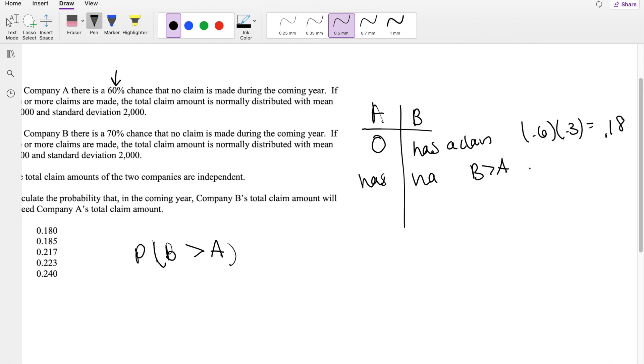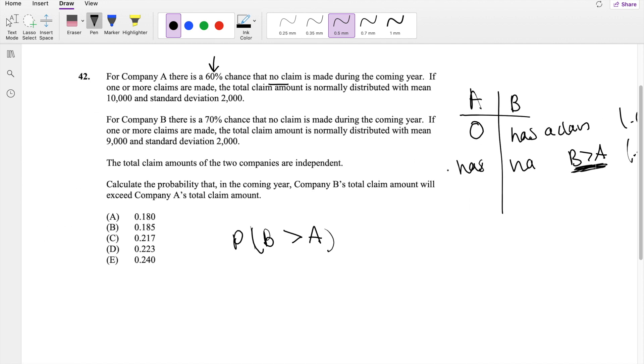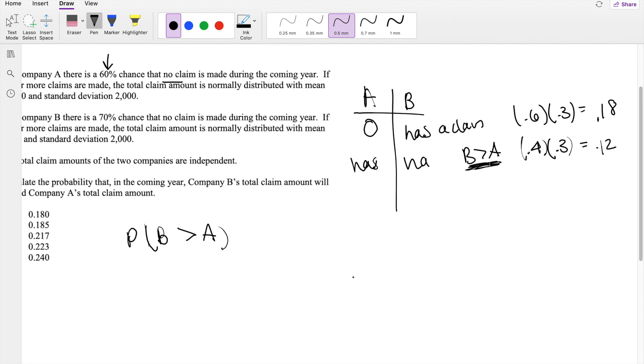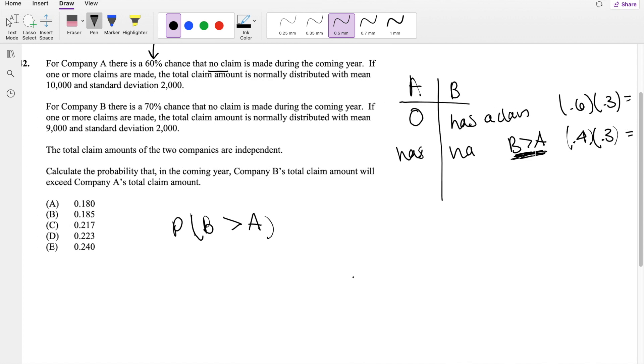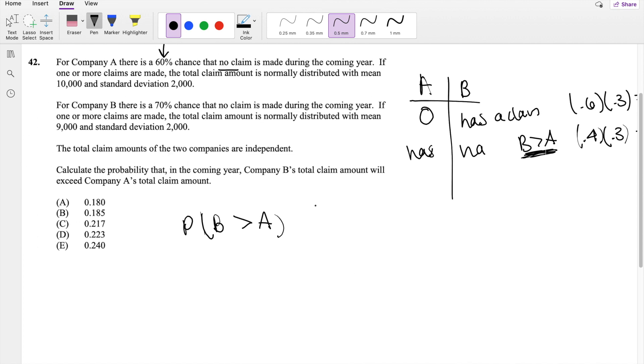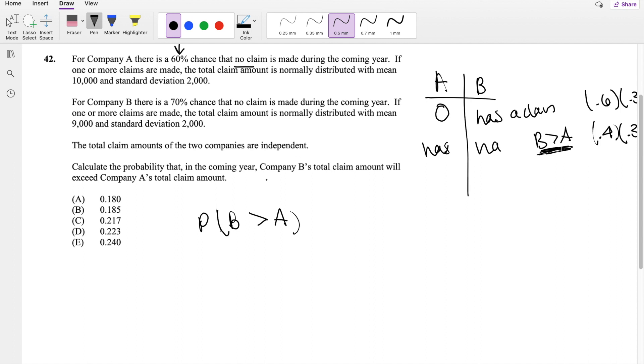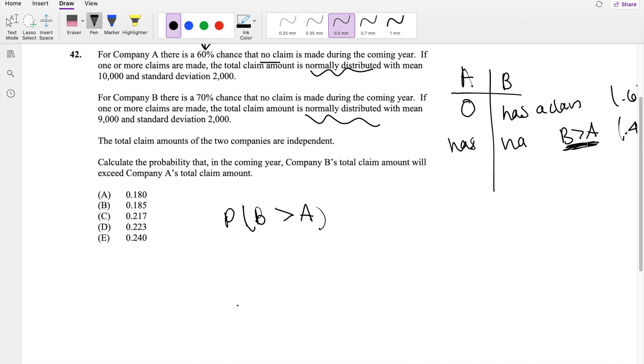And then what is the probability that they both have a claim? If they have 60% chance of no claim, then they must have 40% chance that they have a claim. So this is equal to 0.12 times the probability that B is greater than A. We can't forget about that. So when we're looking at the probability that B is greater than A, this is just basically looking at the bivariate normal distribution, because we know that B and A are both normally distributed. The probability that B minus A is greater than 0.